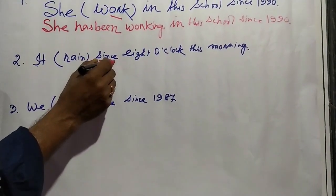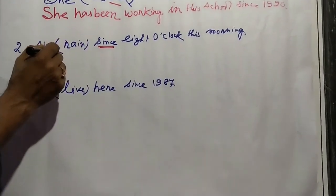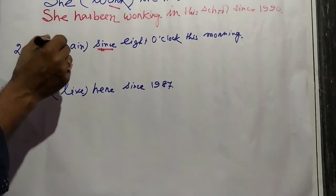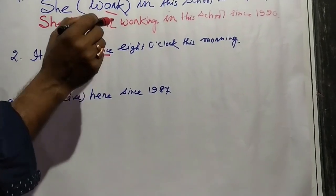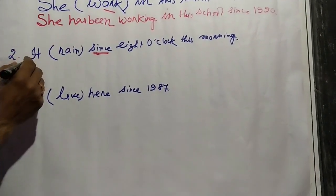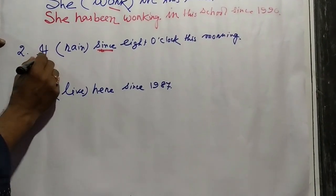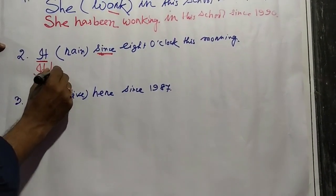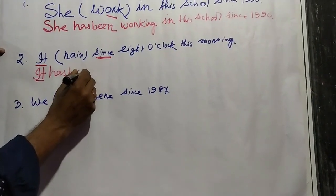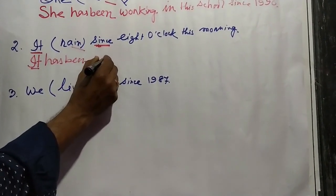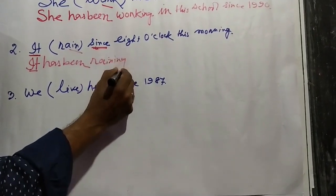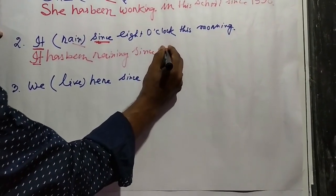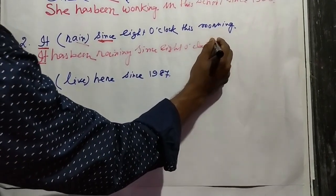Next: 'It rains since eight o'clock this morning.' We see 'since', so this sentence belongs to present perfect continuous. 'It' is third person singular, so we use 'has been' and add '-ing': 'It has been raining since eight o'clock this morning.'